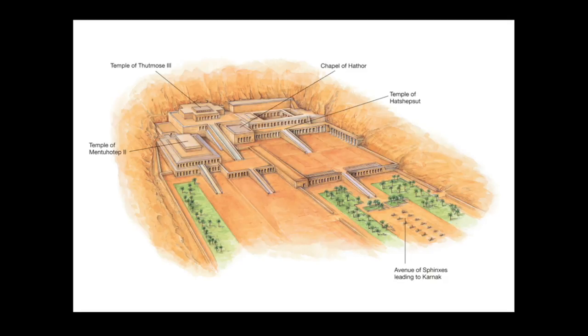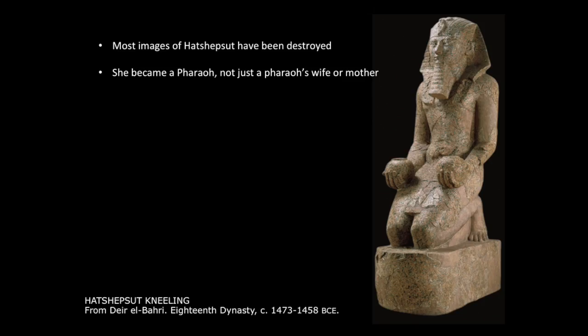Most images of Hatshepsut have been destroyed. She became a pharaoh — not just a pharaoh's wife or mother — which is an important distinction. In the ancient Egyptian language, there is no female version of the word for pharaoh. She was not queen; she was king; she was pharaoh. Her representation shows her dressed in traditional pharaoh garb — the pharaoh beard, the pharaoh crown, the pharaoh skirt. She's dressed as a man.